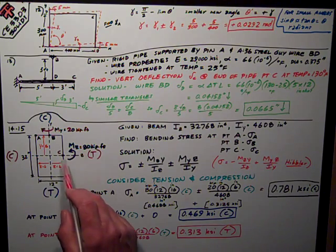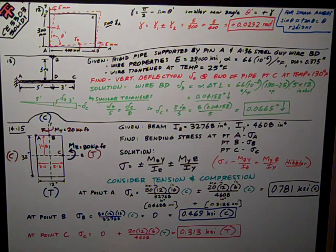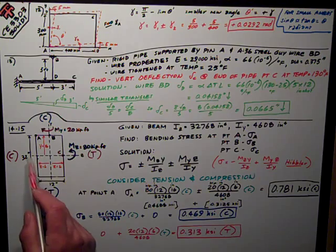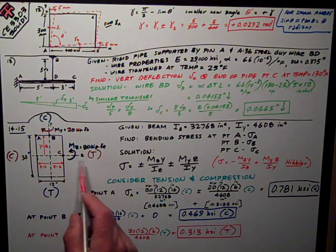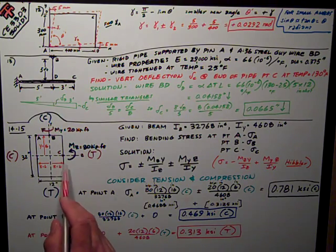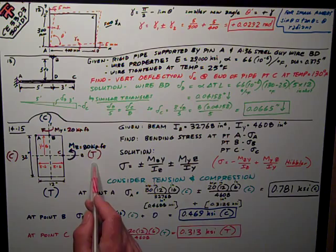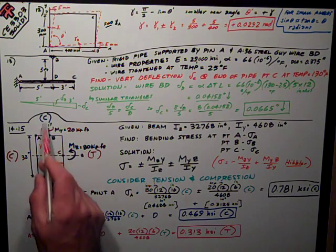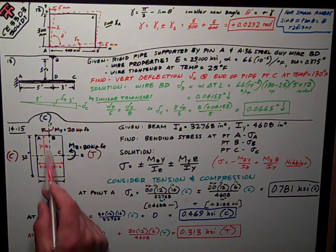At point C, over here on the side, it's on the neutral axis for z-bending M_z, so M_z component goes to zero, and all I've got is, in this case, tension on the right side of the neutral axis for y-bending M_y.